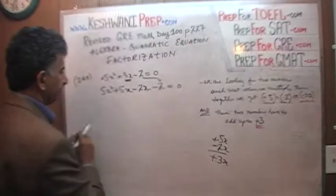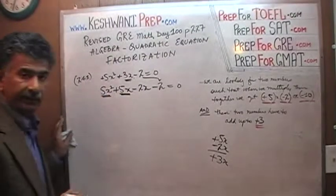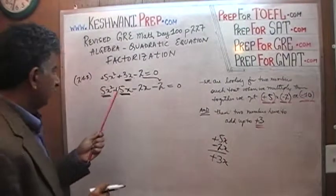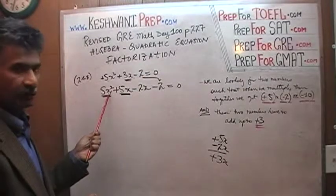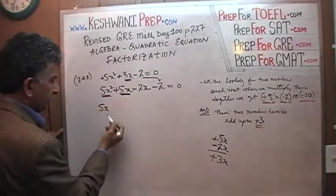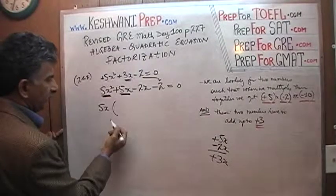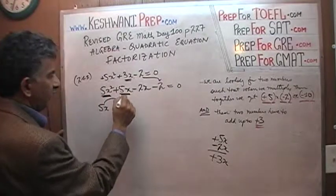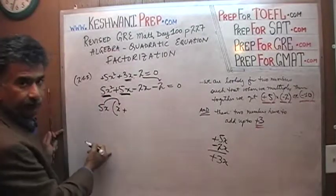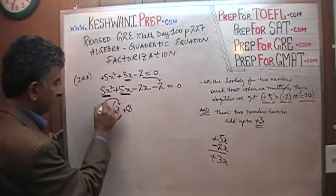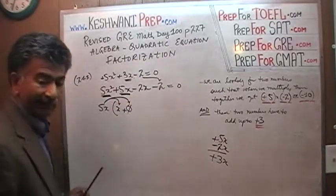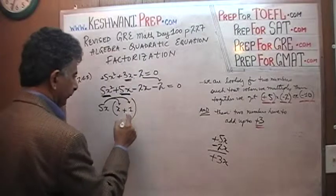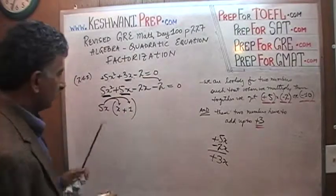Now we start looking for common factors. Looking at the first two terms, I see a common factor of 5 and also x — this term has x and this one has x squared. Let's take out 5x. After taking out 5x, we are left with x from the first term and 1 from the second term, because 5x times 1 gives us 5x.